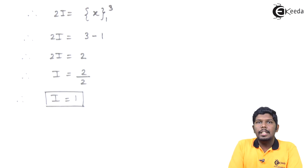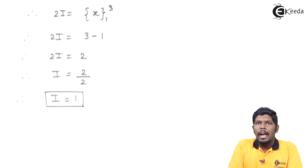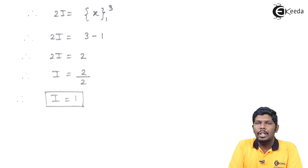Remember, friends, this problem can be solved without using the property, but using the property this sum becomes much easier. If you want to solve this problem without using the property, you can see in the denominator there is a root, and to eliminate that root you can rationalize the given integral. By rationalizing, you can directly solve the integral without using the property. But you should know how to find integrals using the standard properties.